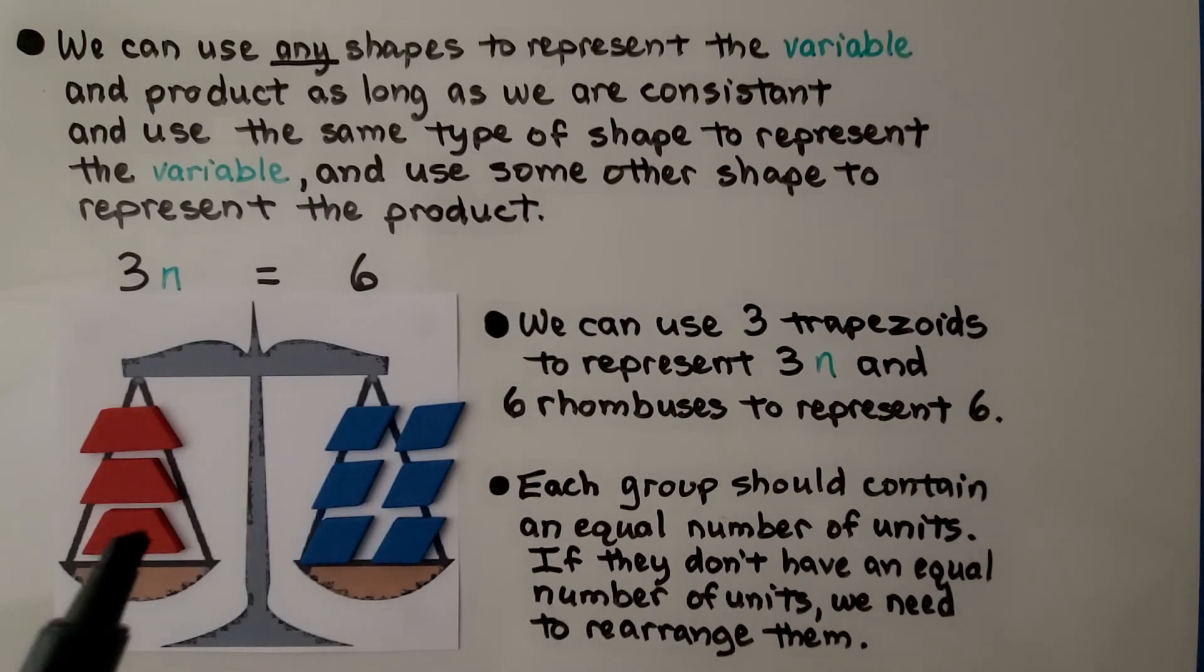One trapezoid, two rhombuses, one trapezoid, two rhombuses. They contain an equal number of units. If they don't have an equal number of units, we need to rearrange them until they do.